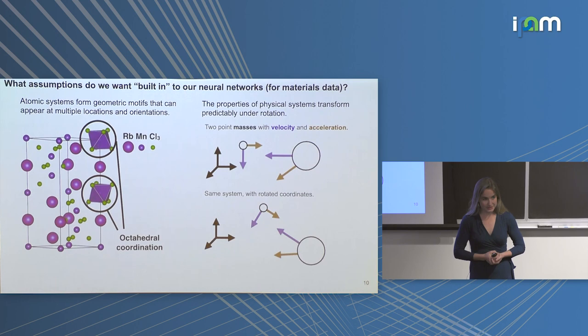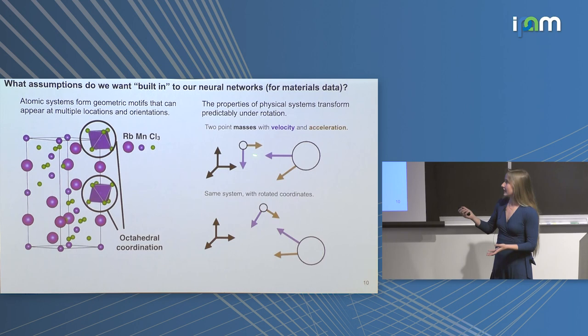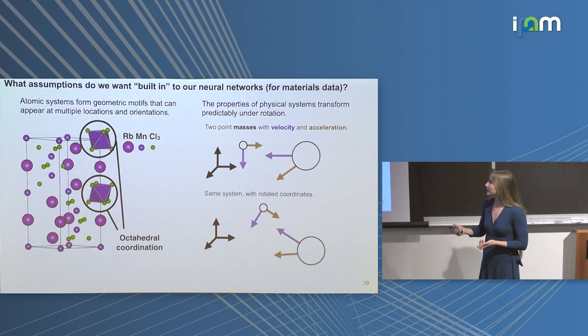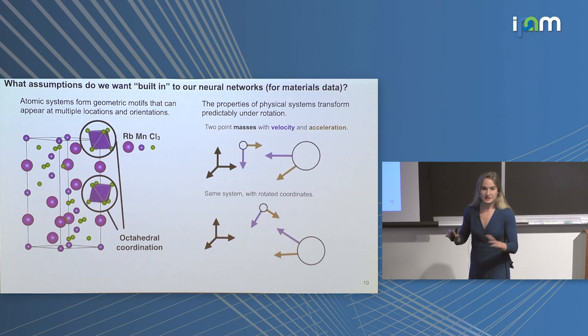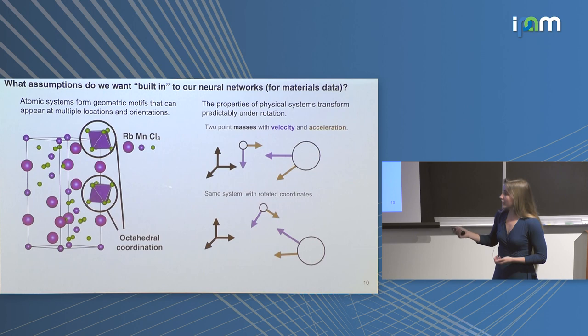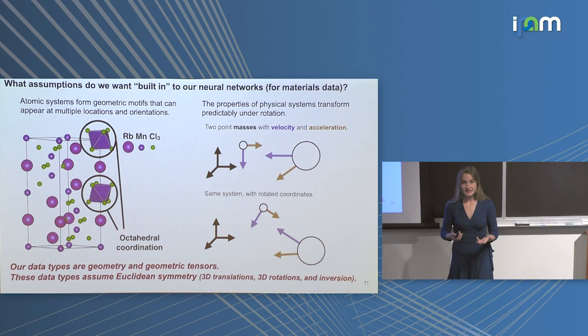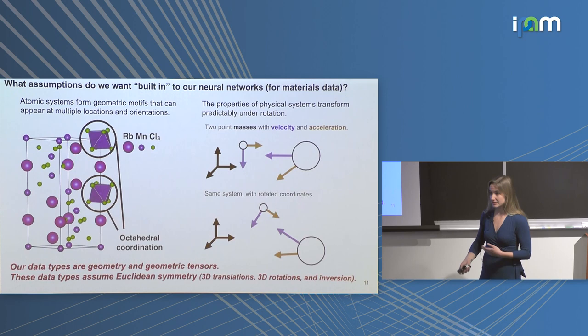Furthermore, the properties of physical systems are described by geometric tensors, meaning physical properties transform predictably under rotation. If I have two masses with velocity and acceleration vectors and I rotate my coordinate system, the masses — which are scalars — don't change under rotation. But the vectors do transform with the rotation at the same rate as the rotation.